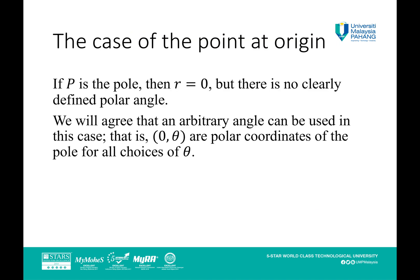The case of the point at origin: if P is the pole, then r equals zero, but there is no clearly defined polar angle. We will agree that an arbitrary angle can be used in this case; that is, (0, θ) are polar coordinates of the pole for all choices of θ.